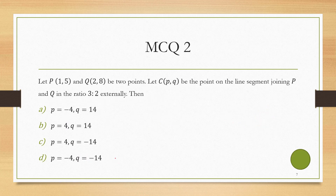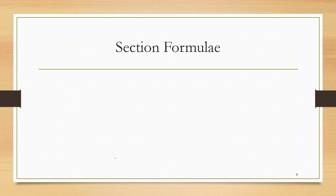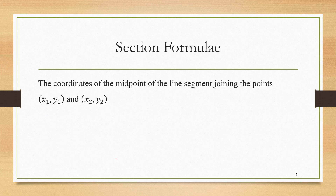Let's do a multiple choice question based on this. The third section formula is related to finding the midpoint of the line segment joining two points x1,y1 and x2,y2. The midpoint is given by (x2+x1)/2, (y2+y1)/2.